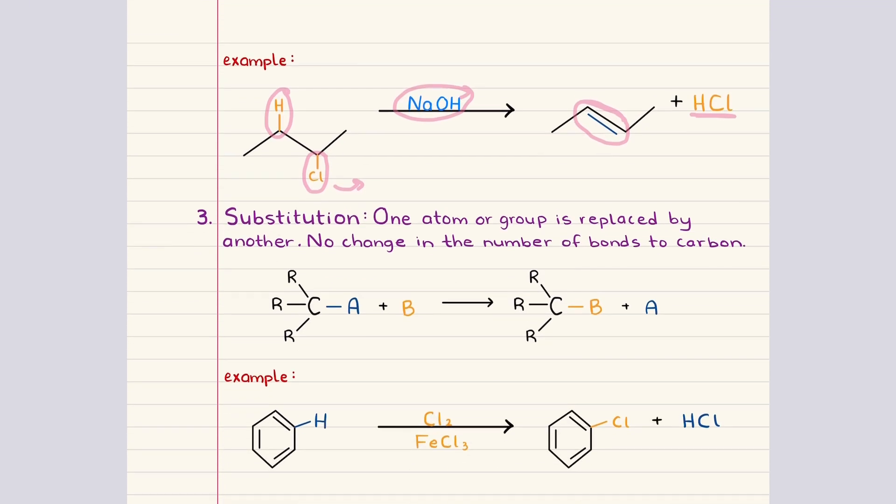Now, elimination reactions can also extend beyond double bonds. If the starting molecule already contains a double bond and has appropriate atoms or groups on adjacent carbons, then an additional elimination step can remove those groups and convert that double bond into a triple bond.